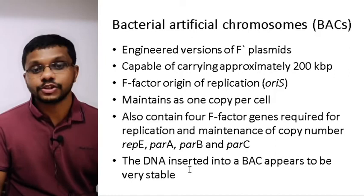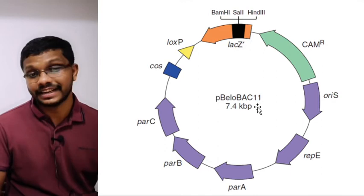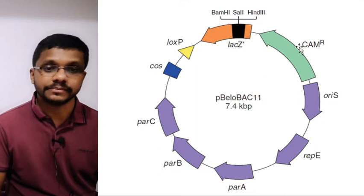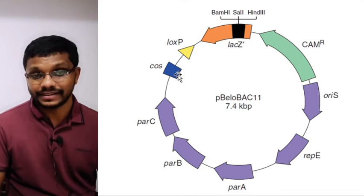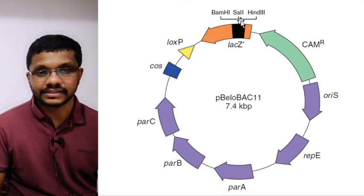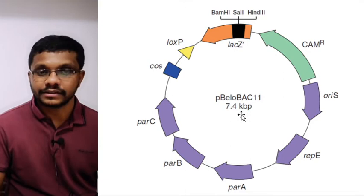The DNA inserted into the BAC is very stable. Here is an example of a BAC vector: pBAC11. Its size is only 7.4 kilobases, but it can carry about 200 kilobases of DNA. It contains a kanamycin resistance gene for identification of recombinant strains, the oriS origin of replication, repE, parA, parB, and parC for partitioning and replication, a cos site so the DNA can be packaged like a cosmid into a lambda vector, a loxP site for recombination, and a lacZ gene with multiple cloning sites.